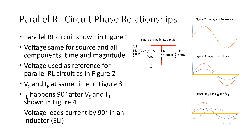There is no difference in time from when voltage is applied to and current flows through a purely resistive element. So in Figure 3, V source and IR are in phase, meaning they happen at the same time. From our previous discussion on inductors, voltage leads current by 90 degrees in an inductor. Therefore IL happens 90 degrees after voltage and the resistive current, as illustrated in Figure 4. This means the two branch currents IL and IR do not happen at the same time.